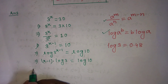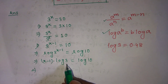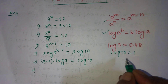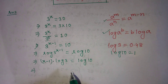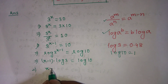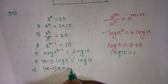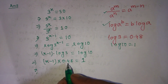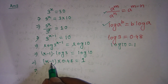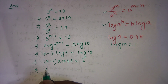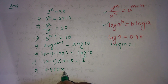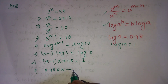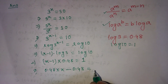Now we put the values of log 3 and log 10. The value of log 3 is 0.48 and the value of log 10 is 1. So we write: x minus 1 into 0.48 is equal to 1. Multiplying out, we get 0.48x minus 0.48 is equal to 1.